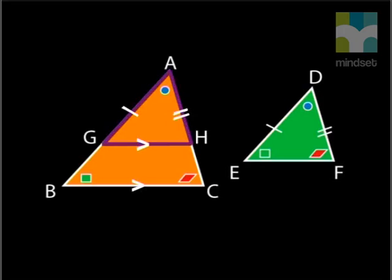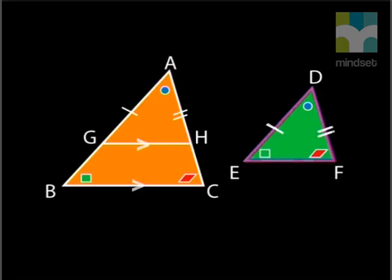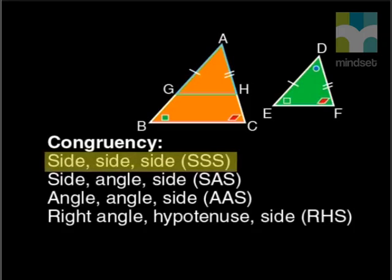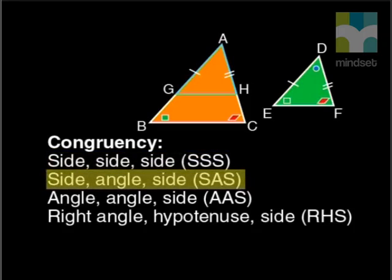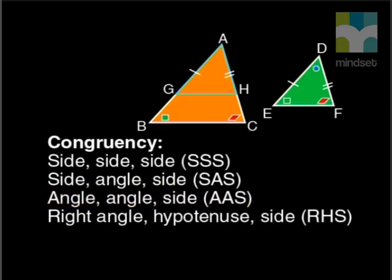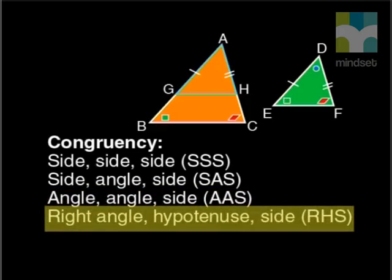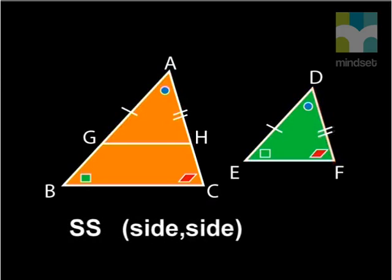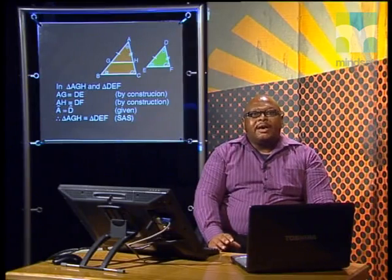Well, that shouldn't be difficult. Can you find three reasons for a congruency proof between triangle AGH and triangle DEF? Remember, for congruency, you need three corresponding sides equal, two sides and the angle between them, two angles and a side, or lastly, a right angle, the hypotenuse and another side equal. We are given AG equal to DE and AH equal to DF. That's two reasons. What can we use for a third reason?